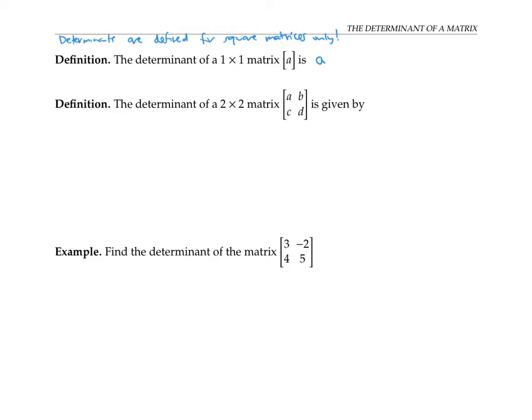So now let's get to the simplest real situation where you want a determinant: the determinant of a two by two matrix. That determinant is given by this crisscross product, A times D minus B times C.